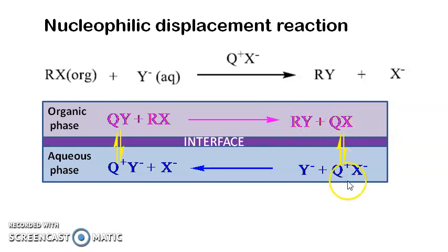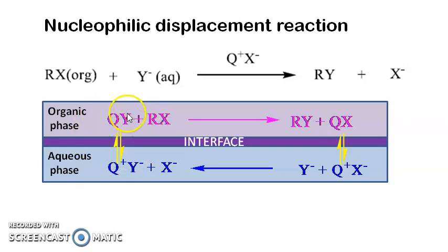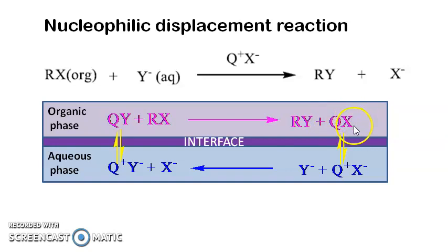After the reaction, you get back the PTC. In the aqueous phase it will again remain in ionic form. So the quaternary ammonium salt takes up the ion which is soluble only in aqueous medium, transfers it to the organic phase, the reaction between the ion and the alkyl halide happens, you get the nucleophilic displacement product, and the PTC is regenerated. So the required contact between the alkyl halide and the anion nucleophile is established by the PTC and the displacement reaction happens.